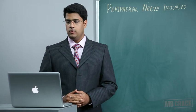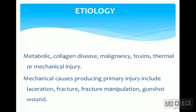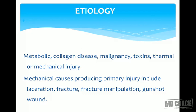Coming to the etiology of peripheral nerve injuries, it can be due to metabolic causes, collagen disease, malignancies, toxins, thermal and mechanical injuries.